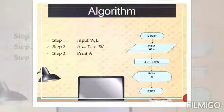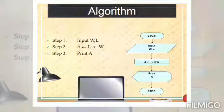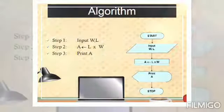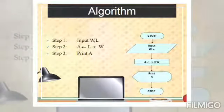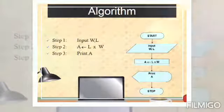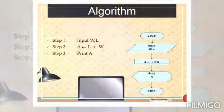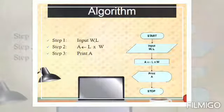Here you can see the flowchart according to this algorithm. First we will input width and length. And the area is calculated by length multiply width. Then we will print area and stop computation.